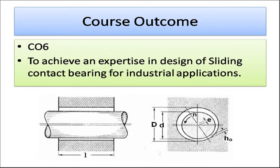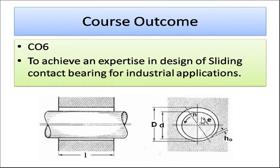At the end of this course — CO6 — students will be able to achieve expertise in the design of sliding contact bearings for industrial applications. We know that a bearing supports a shaft. There is a lubricating oil present between the bearing and the shaft, which is also called the journal. Small d indicates the shaft diameter and capital D indicates the bearing diameter. There is eccentricity e between the centers, a minimum oil film thickness between shaft and bearing, and the shaft rotates at N rpm.